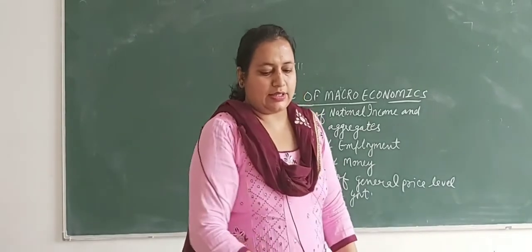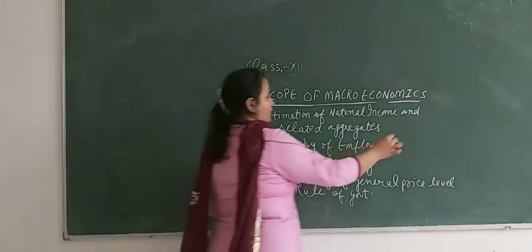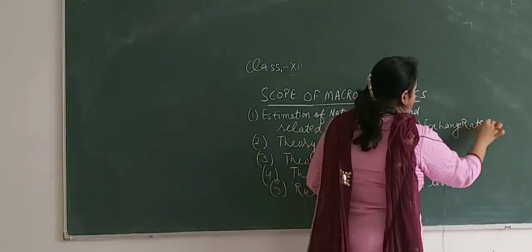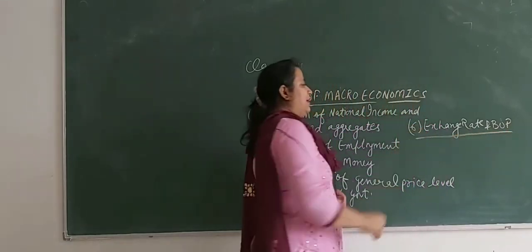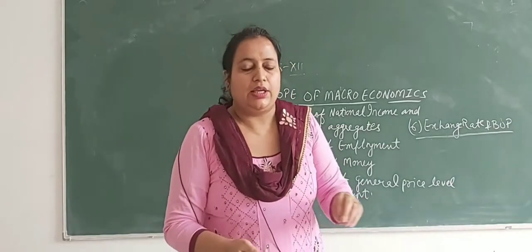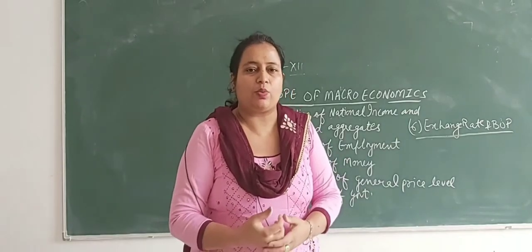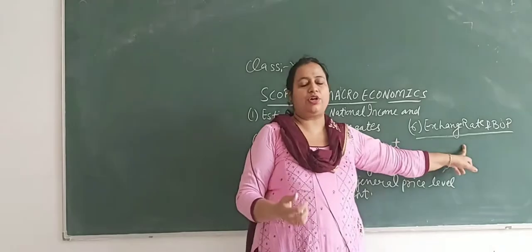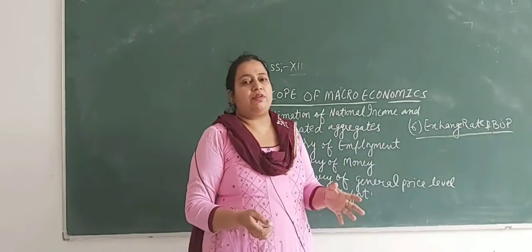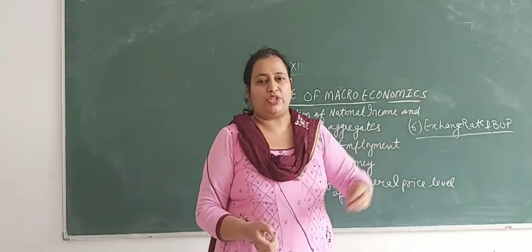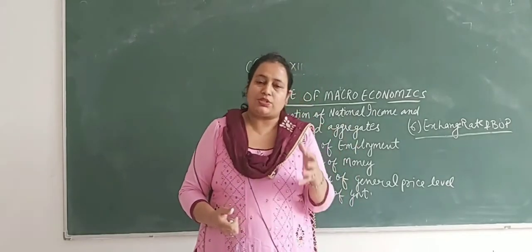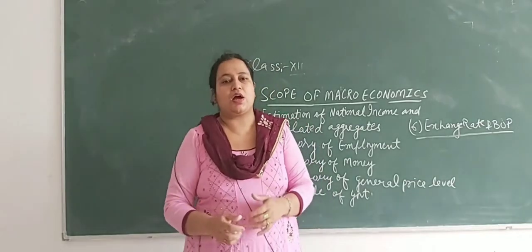Next is exchange rate and BOP. Exchange rate means converting one country's currency to another country's currency — for example, converting rupees to dollars. Suppose 1 dollar equals 72 or 73 rupees. BOP means balance of payment. It is a systematic record of exports and imports of goods and services during the period of an accounting year.